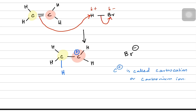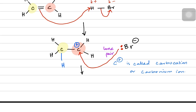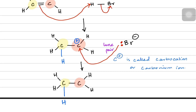What happens next is that the bromide ion donates its lone pair to the positively charged carbon and makes a bond. So the hydrogen from HBr has bonded to one carbon, and the bromide has now bonded to the other carbon, completing the addition of HBr across the double bond.